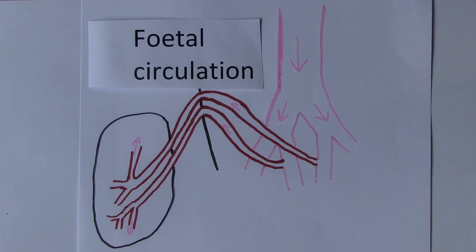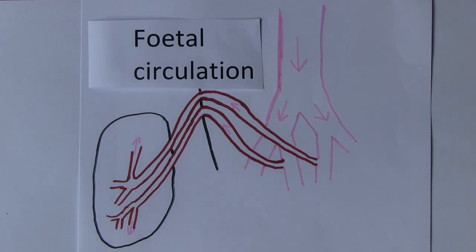To compensate for this, the fetal circulation has some relatively large blood vessels. Three of these act as shunts, shunting blood from one part of the circulatory system to another. These relatively large vessels allow the majority of the blood to bypass the liver and the lungs.